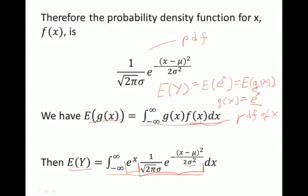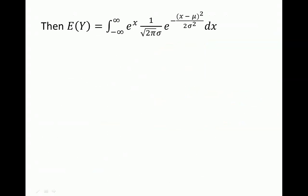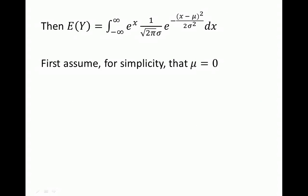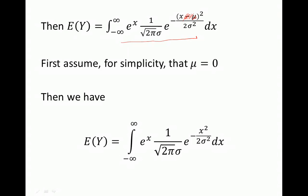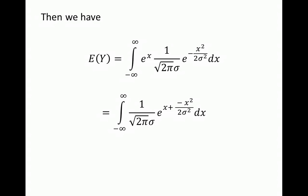To calculate the expectation of y, we need to compute this whole integral. We have some complicated terms inside, so first to make it simpler, let's assume that mu equals 0. This simplifies the expression. Now we have two terms with e to the power of something, so let's combine those terms. Since we're multiplying, we add the exponents, giving us e to the power of x plus minus x squared over 2 sigma squared.